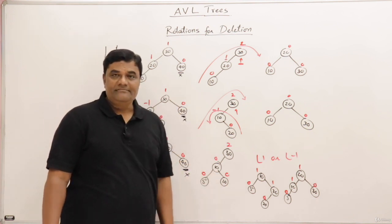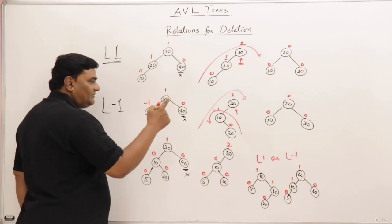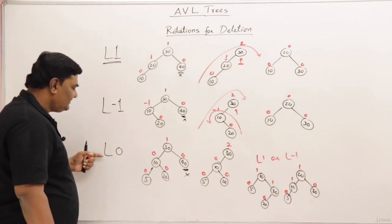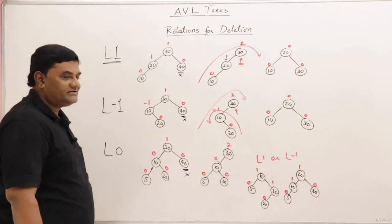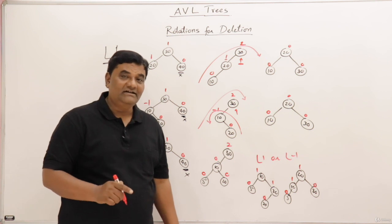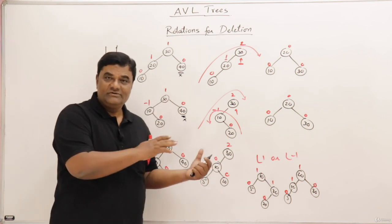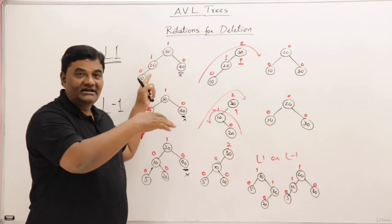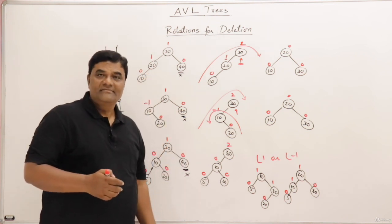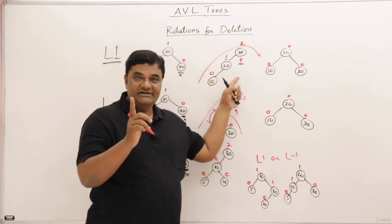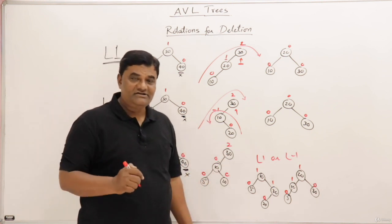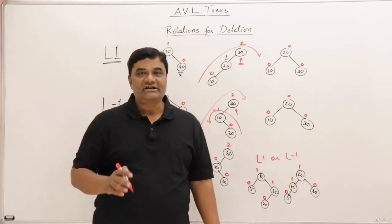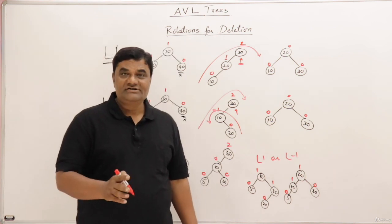So those are the rotations when deleting a node from the right side — they are L1, L-1, and L0 rotations. The R1, R-1, and R0 rotations are simply mirror images of these three cases: deletion is done from the left side and the tree becomes imbalanced on the right side. Where we had LL rotation, there we have RR; where we had LR, there we have RL. You can try out the R rotations by yourself. That's all about rotations at the time of deletion.